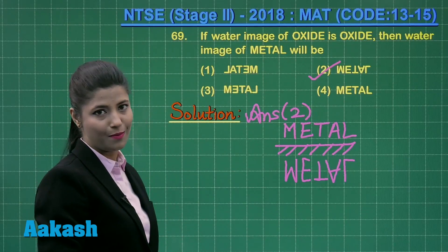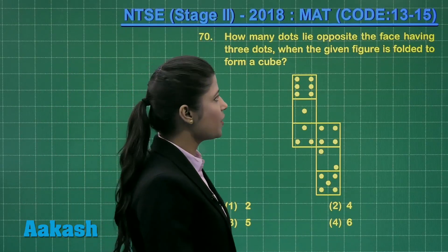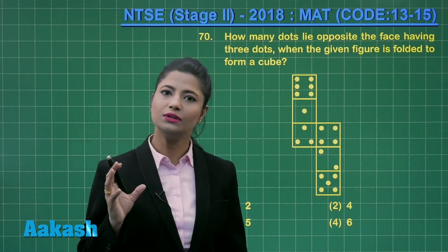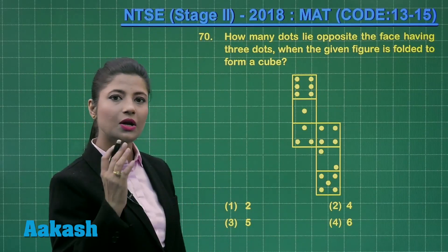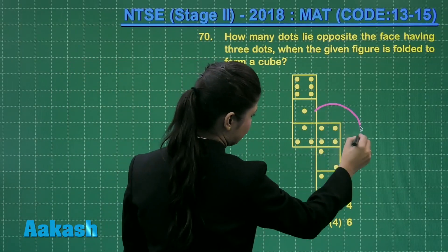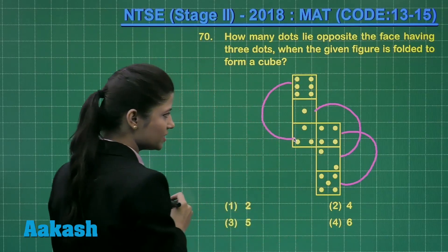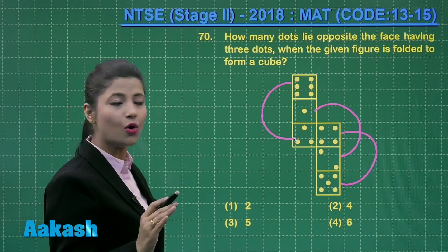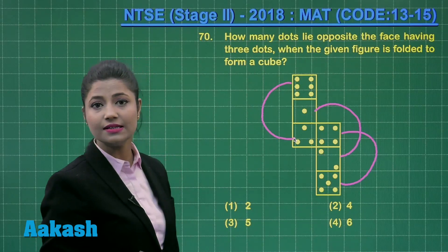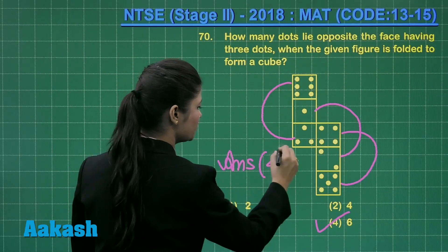Now let us move on to question number 70, related to dice. It states: how many dots lie opposite the face having three dots when the given figure is folded to form a cube? Whenever you fold the nets of a dice to obtain a cube, the alternate faces are opposite to each other. Considering the faces in the net, 3 dots lie opposite the face having 6 dots. So option number 4 is the correct answer.